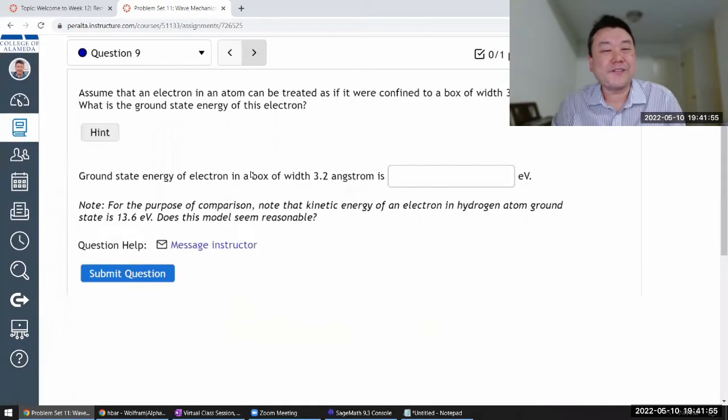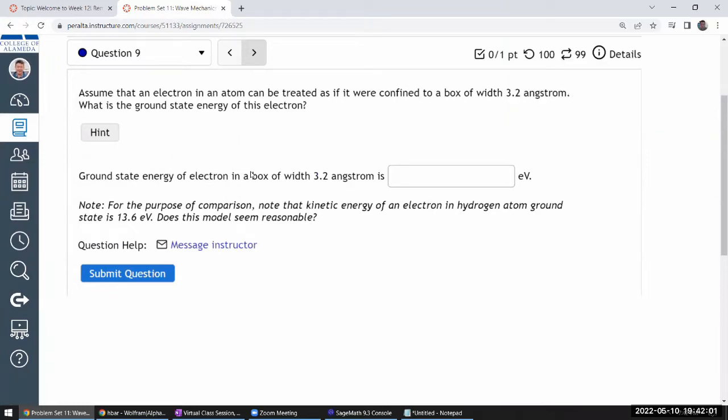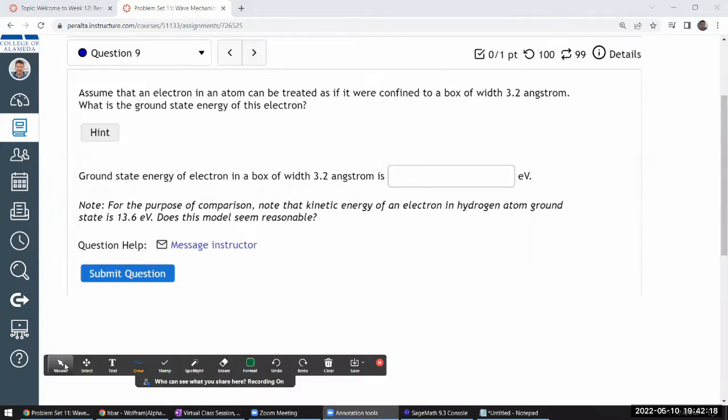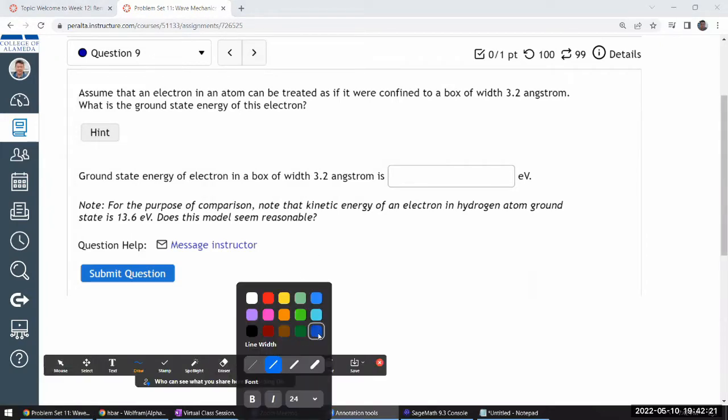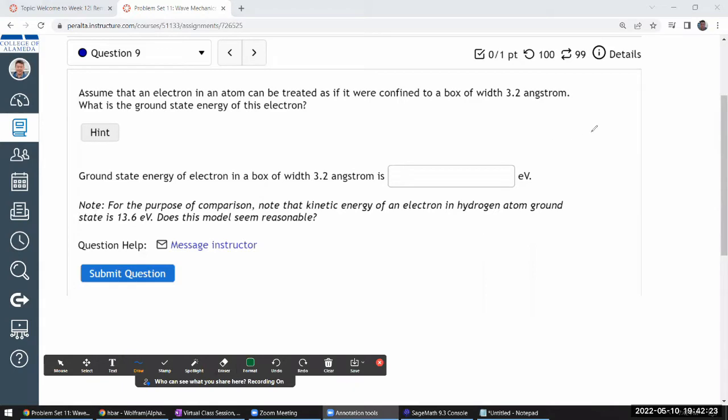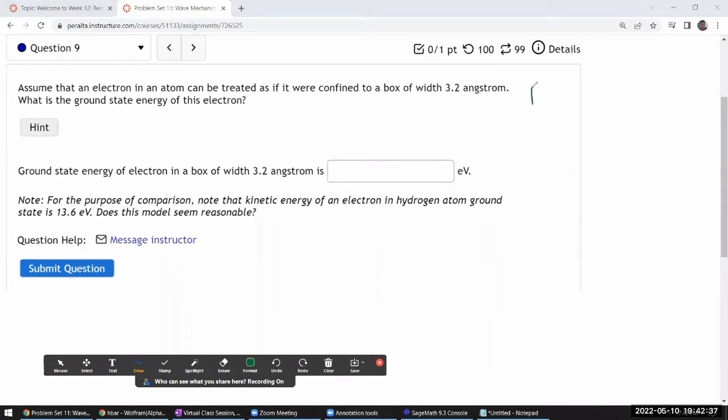Question 9. Assume that an electron in an atom can be treated as if it were confined to a box of width. That's interesting. And when it says box of width, I think it's talking about the one-dimensional box. So we are saying, so we have a box of some size. And even though the question didn't explicitly specify, I'll treat this as an infinite square well.